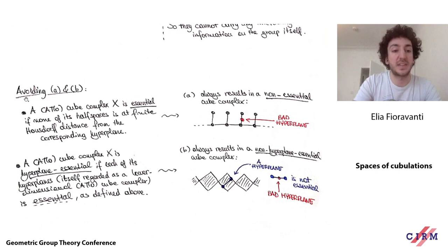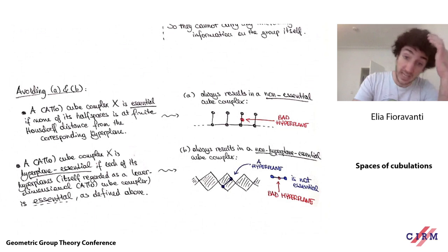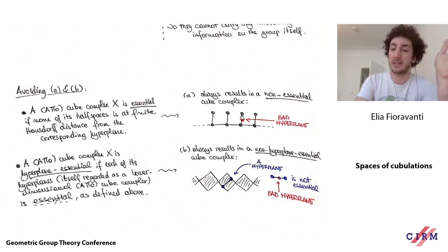We say a CAT(0) cube complex is essential — a definition due to Sageev and to Caprace–Sageev. A cube complex is essential if none of its half-spaces is at finite Hausdorff distance from the hyperplane that defines it. Procedure A always results in something that's not essential: whenever you attach a loose edge, you create a hyperplane whose midpoint is a hyperplane, and the tip of the loose edge is a half-space at bounded distance from the hyperplane. So this kills essentiality.